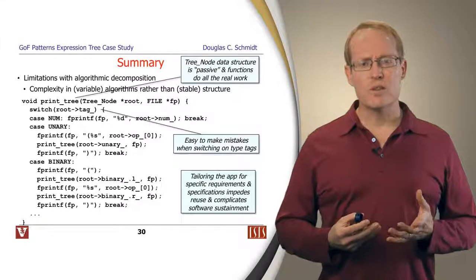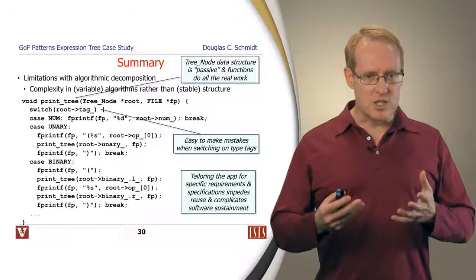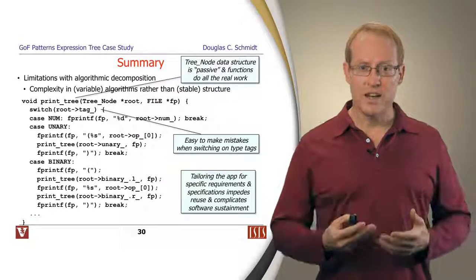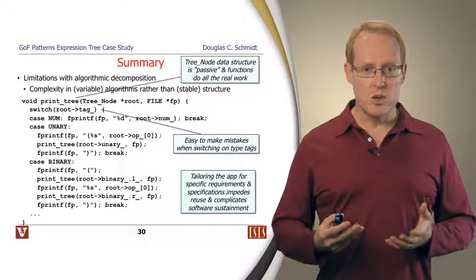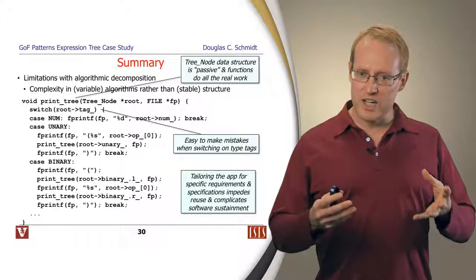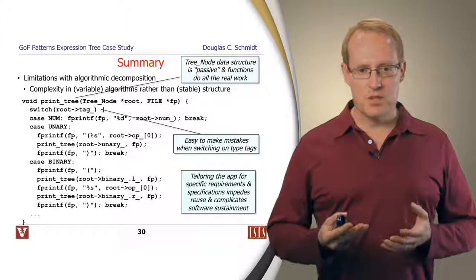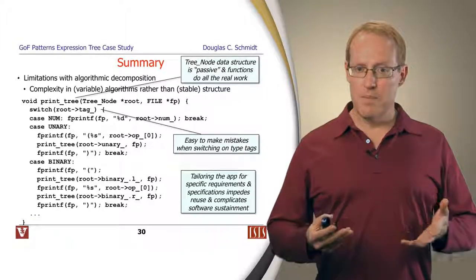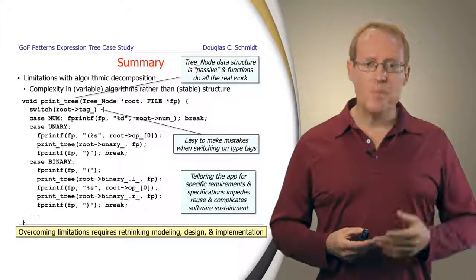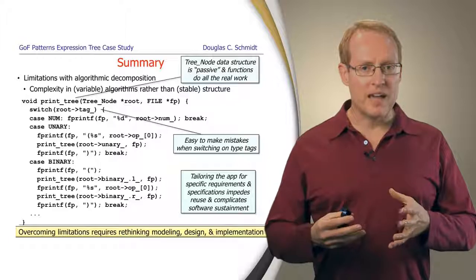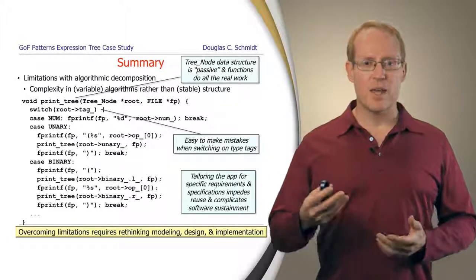In general, tailoring an application for specific requirements and specific specifications, as we've done in this algorithmic decomposition, can greatly impede reuse because things are tightly coupled for a particular context and hard to apply elsewhere. And it also tends to complicate software evolution and maintenance, which is sometimes called sustainment. In order to overcome these limitations, we're going to have to step back and rethink the way we model, the way we design, and the way we implement. And we'll talk about this in the next part of the module.